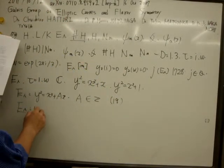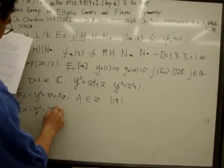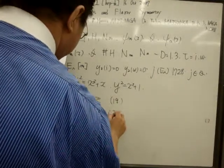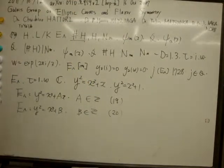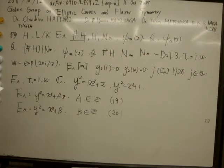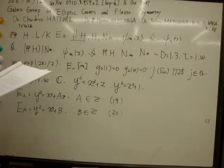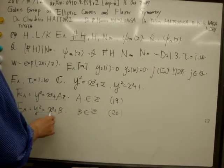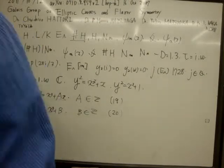E lambda: y² equals x³ plus b, b∈Z (equation 20), which is isomorphic to the elliptic curve y² equals x³ plus 1.